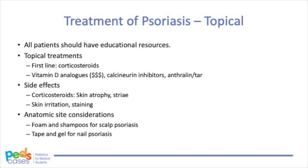All patients should be provided with educational resources to better understand psoriasis, especially given its chronicity. Treatments include topical, light, and systemic therapies, with selection depending on clinical presentation, comorbidities, and patient preferences. Topical therapies include corticosteroids, vitamin D analogues, calcineurin inhibitors, and anthralin or TAR preparations. These are used in milder forms of psoriasis, especially chronic plaque type. Corticosteroids are generally first-line and effective for limited psoriasis — for Lucy, topical corticosteroids would be an appropriate starting treatment. Vitamin D analogues are another first-line therapy but can be more costly. Calcineurin inhibitors, including tacrolimus and pimecrolimus, are an option for the face and intertriginous areas. TAR and anthralin preparations can be used for thicker plaques.